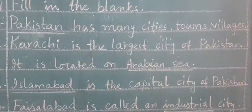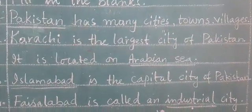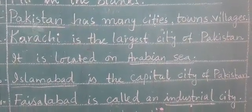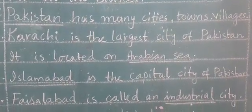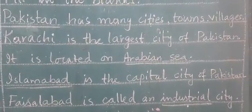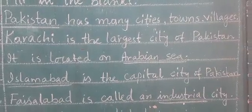Number 2: Karachi is the largest city of Pakistan. It is located on the Arabian Sea. Arabian Sea is a blank.